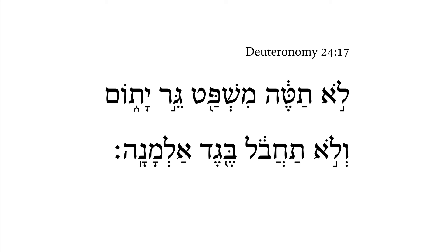Deuteronomy 24:17. In the next couple of verses, we get a section on how to care for the sojourner, the orphan, and the widow. You can see those terms here — sojourner, orphan, and widow. These three often occur together in Deuteronomy, somewhat representative of what I would say is the least of these, or those who would be disenfranchised. And we get these commands here: not to pervert justice against these.